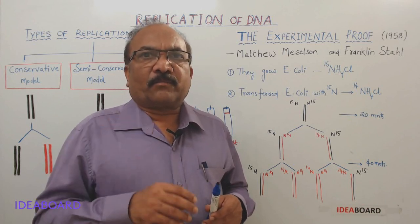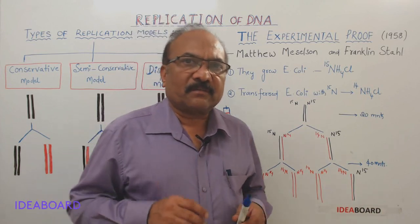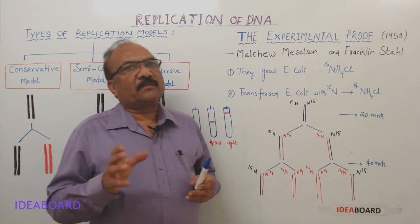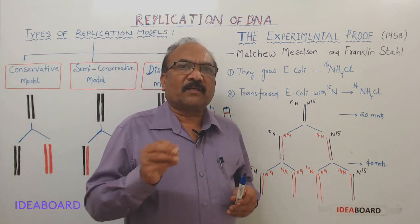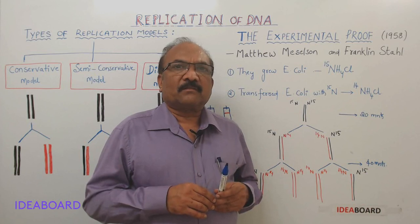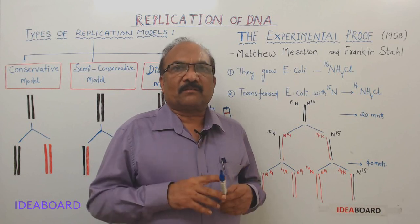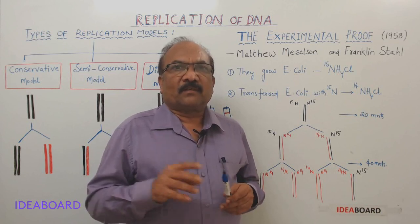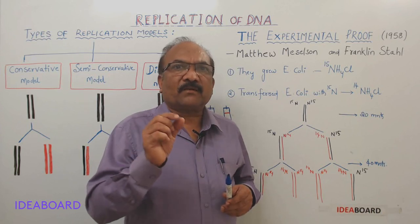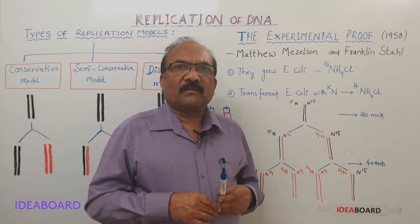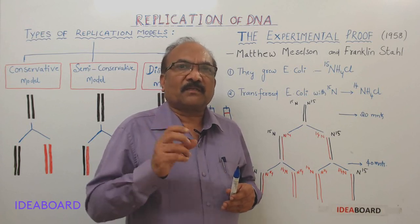In prokaryotes, replication occurs at the time of binary fission. Whereas in eukaryotes, replication occurs at the time of cell division, both during mitosis as well as during meiosis — specifically during interphase, and more specifically during S phase, which is called synthetic phase.